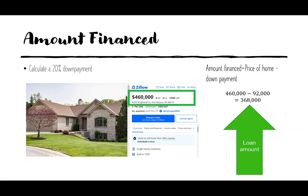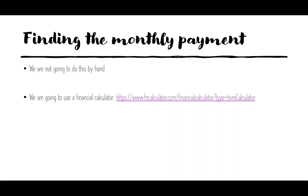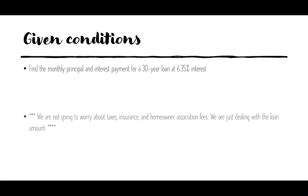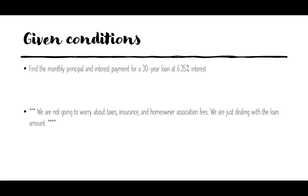To find the monthly payment, we are not going to do this by hand. We are going to use this financial calculator — you can see the URL right here, and I'll also put it in the description. We're going to find the monthly principal and interest payment for a 30-year loan at 6.35% interest. We are not going to worry about taxes, insurance, or homeowners association fees — we're just looking at the loan amount right now.